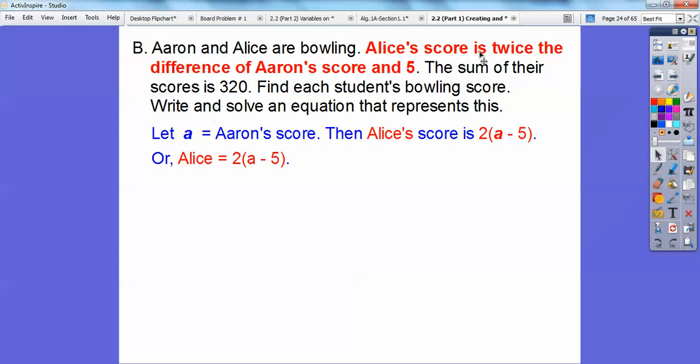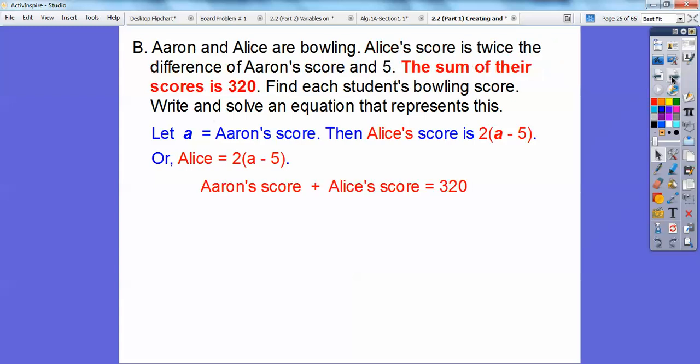If we let A equal Aaron's score because everything's revolving around Aaron right here, and then it says Alice's score is, that's going to be our equal sign. Alice's score is twice, there's the 2 right here, twice the difference, there's the minus sign for the difference. Aaron's score, remember Aaron's score is A, twice the difference of Aaron's score and 5. So there's the difference of Aaron's score and 5, and there's twice that right there. So Alice is 2 times A minus 5. And then the total, the sum of their scores is 320. Let's plug in Aaron's score plus Alice's score equals 320. Now we're going to solve that equation for A.